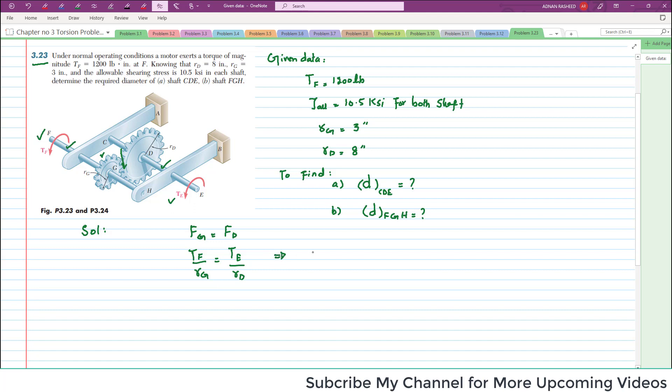We can calculate TE from this equation. So TE will equal RD over RG into TF. So here we have RD value, RD is 8 inch, RG is 3 inch and TF is 1200 pound-inch.